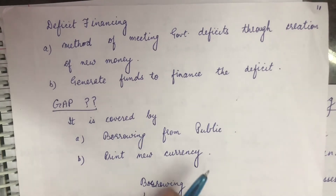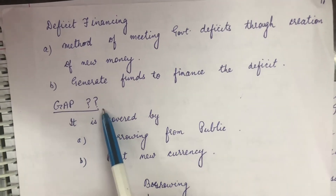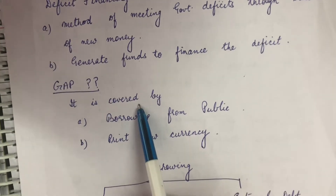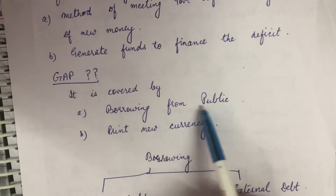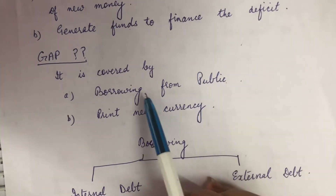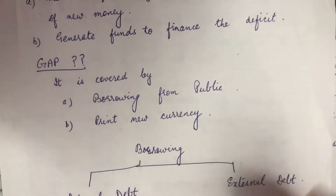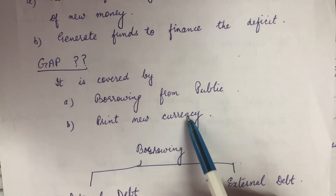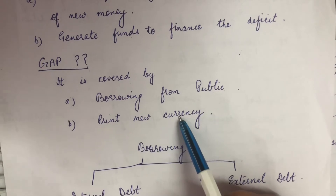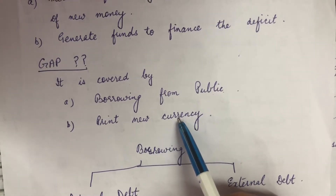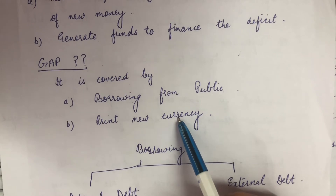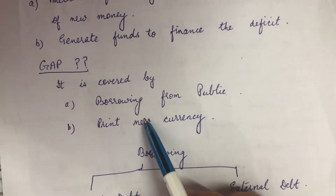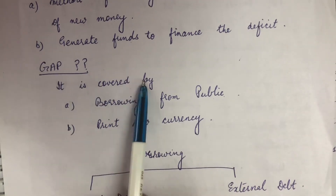Now the next question arises: this gap that has occurred, how will it be filled? Where will the money come from? It is covered by two ways: first, borrowing from the public; second, printing new currency. Who prints this currency? Obviously the RBI — Reserve Bank of India has the right to print new currency. So these are the two methods by which this gap can be filled.